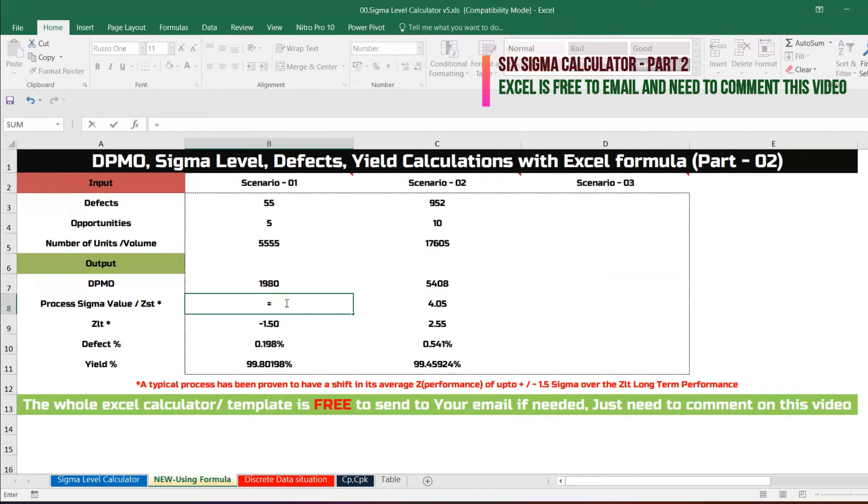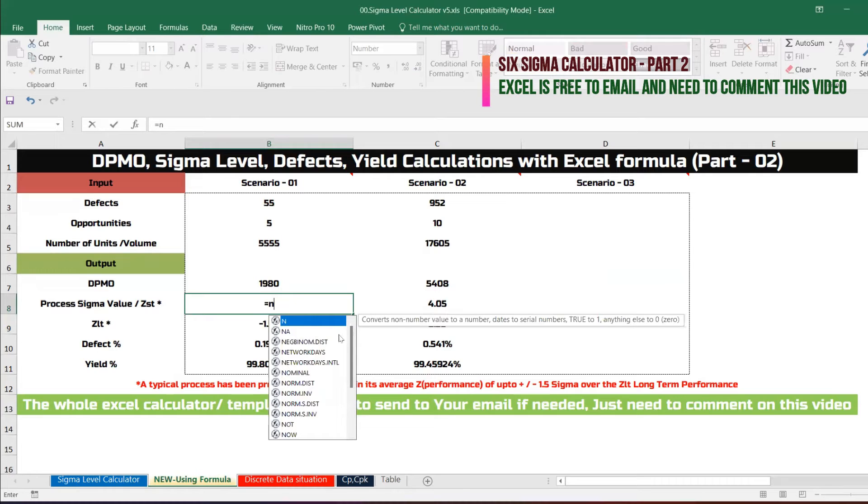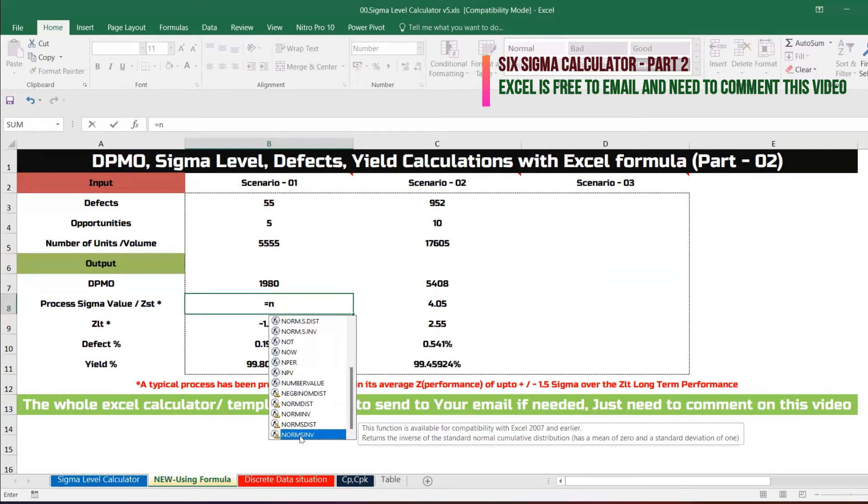All you need to do is give equal to NORM.S.INV. This is the formula. The inverse of standard normal cumulative distribution as mean zero, standard deviation R1. This is the formula we need to use.